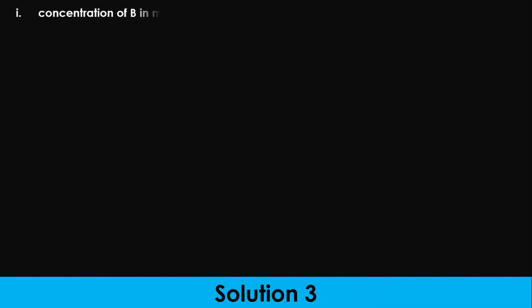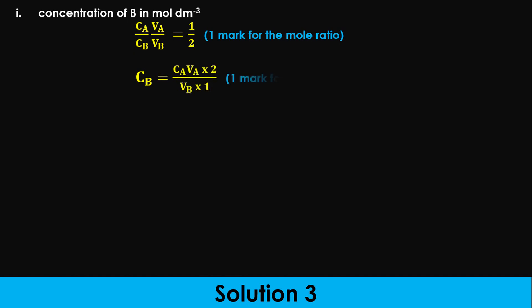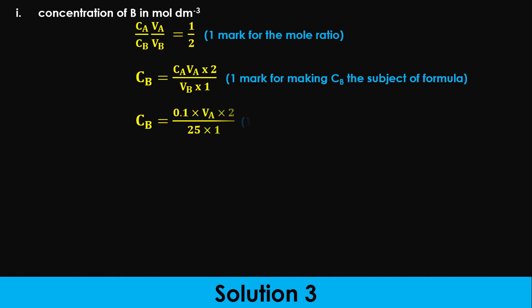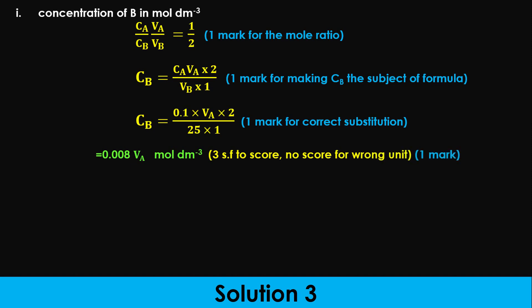To calculate the concentration of B in moles per dm³, use the mole ratio formula connecting the concentrations and volumes of the oxidizing and reducing agents with their number of moles: CₐVₐ over CᵦVᵦ equals 1 over 2. Since we know all values except Cᵦ, make Cᵦ the subject of the formula, substitute the values, and evaluate to obtain 0.008 Vₐ moles per dm³ in three significant figures.